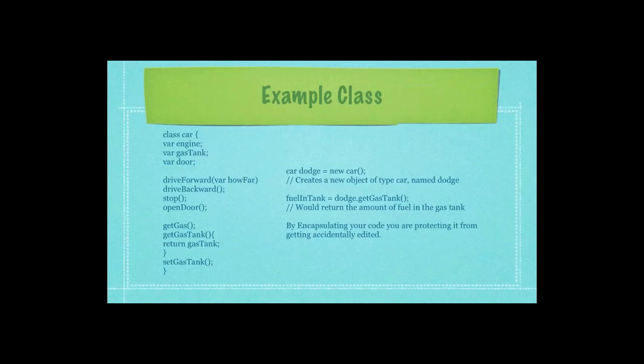What you have to understand is it's good practice to not allow somebody to directly be able to access your variable values, in this case, engine, gas tank, and door. So, object-oriented programming believes that you should actually create functions that would allow you, in this specific example, to access the gas tank. You would use the function get gas tank any time you would want to be able to access and receive the actual value stored in variable gas tank with this function.